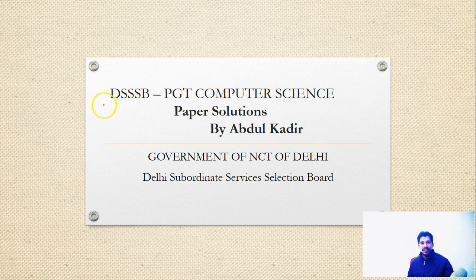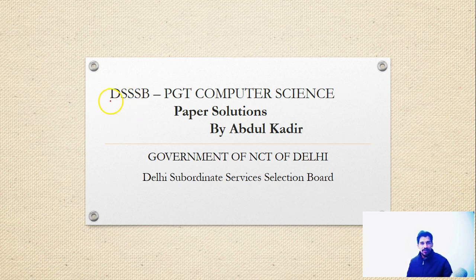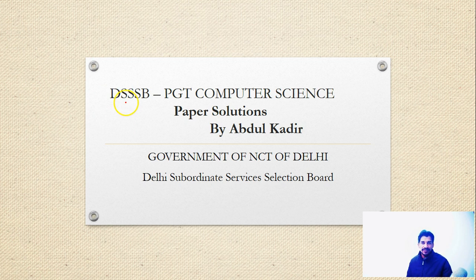If your interest is in teaching, you can apply for this post. They have released various posts for various subjects such as Art, Science, and Commerce. In this video, we are going to discuss only about Computer Science — specifically the notification, the number of posts for general, OBC, SC, ST and PH categories, the selection criteria, examination pattern, and age criteria. We will also start a new video series for DSSB covering previous questions.